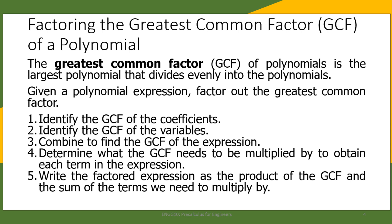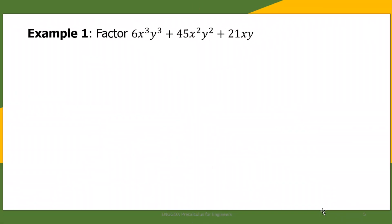We write the factored expression as the product of the GCF and the sum of the terms we need to multiply by. To understand this better, let us look at examples. For our first example, let us factor 6x³y³ + 45x²y² + 21xy. First, let us take a look at the constants, the coefficients. So we have 6, 45, and 21. What is the greatest common factor of these three coefficients?